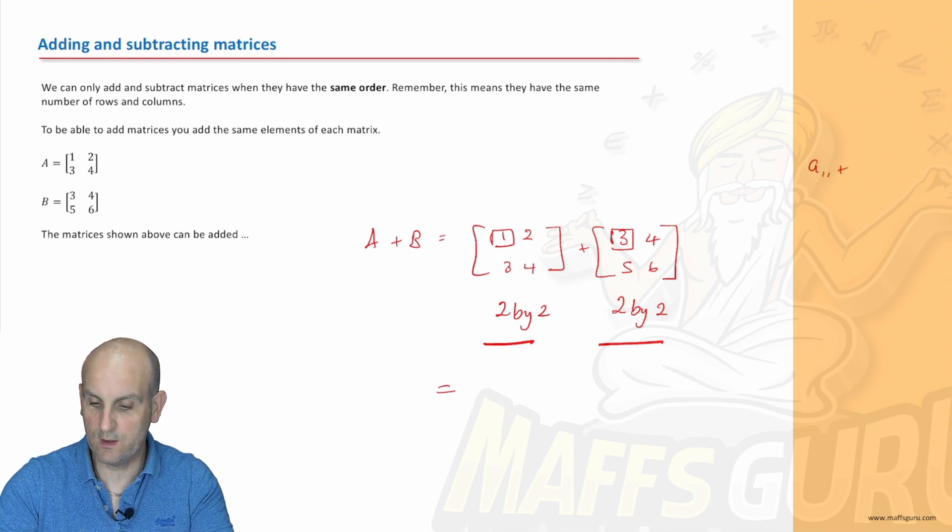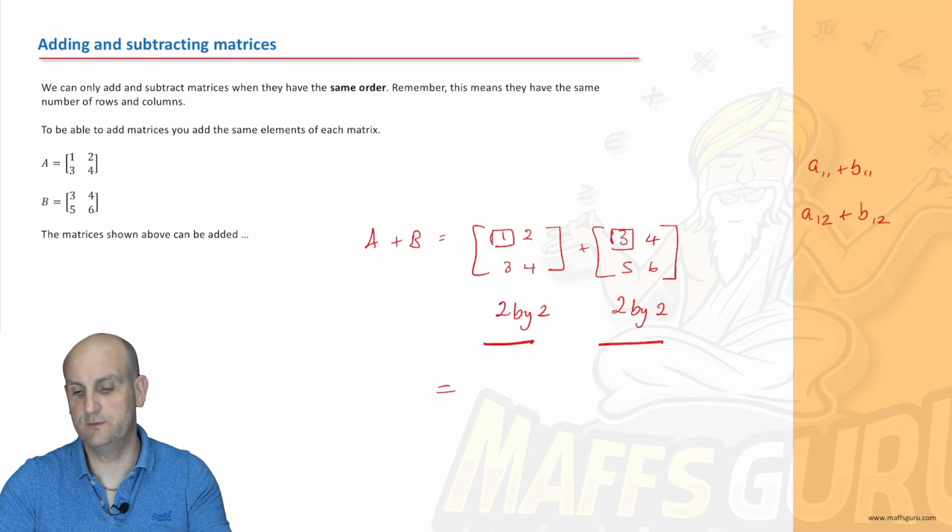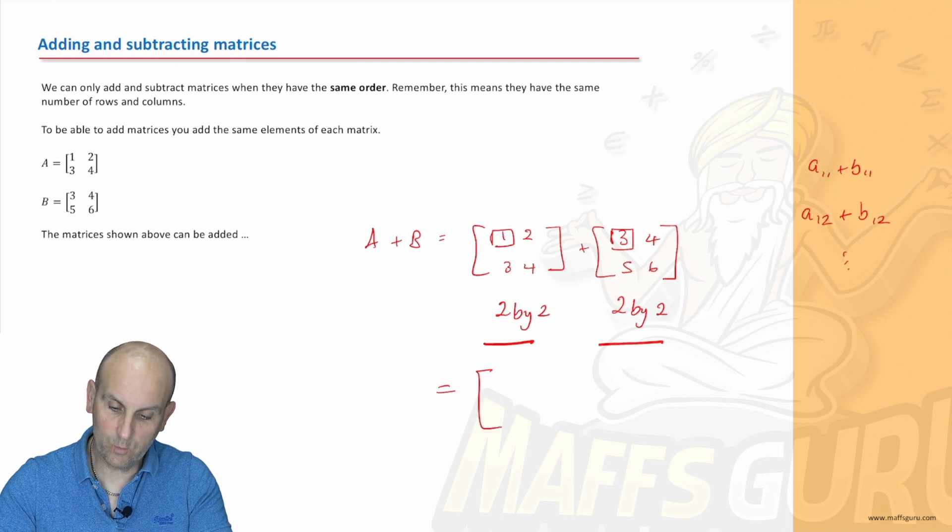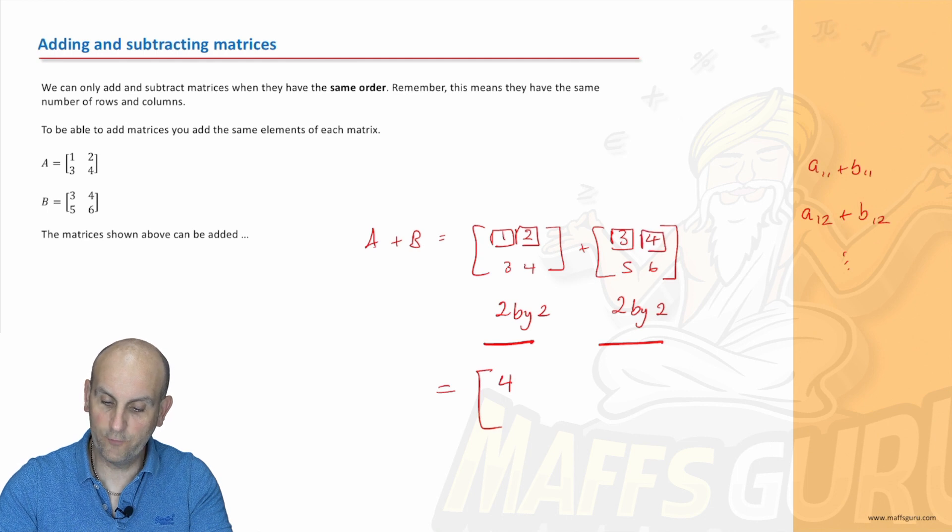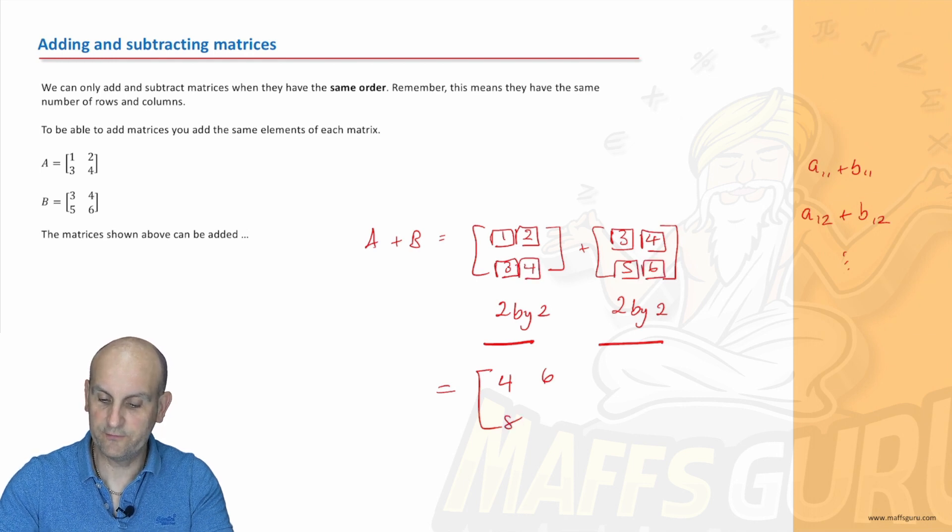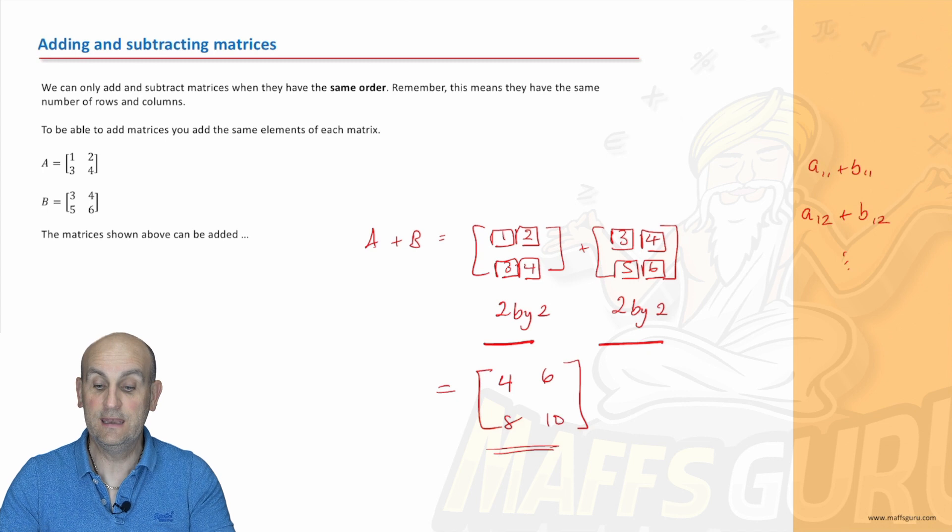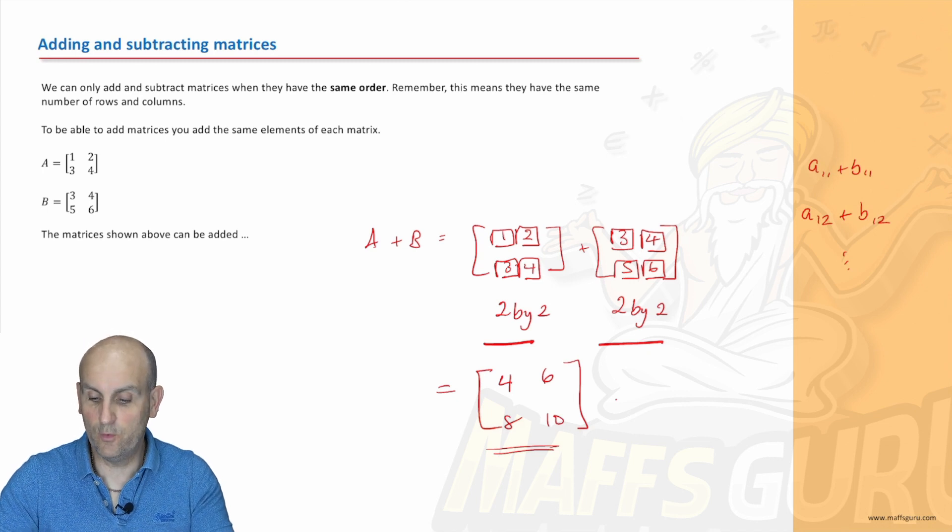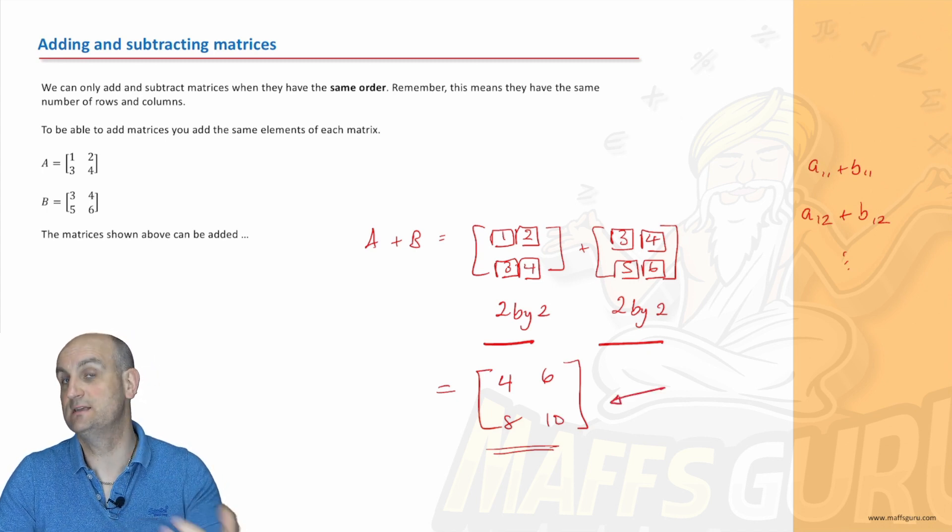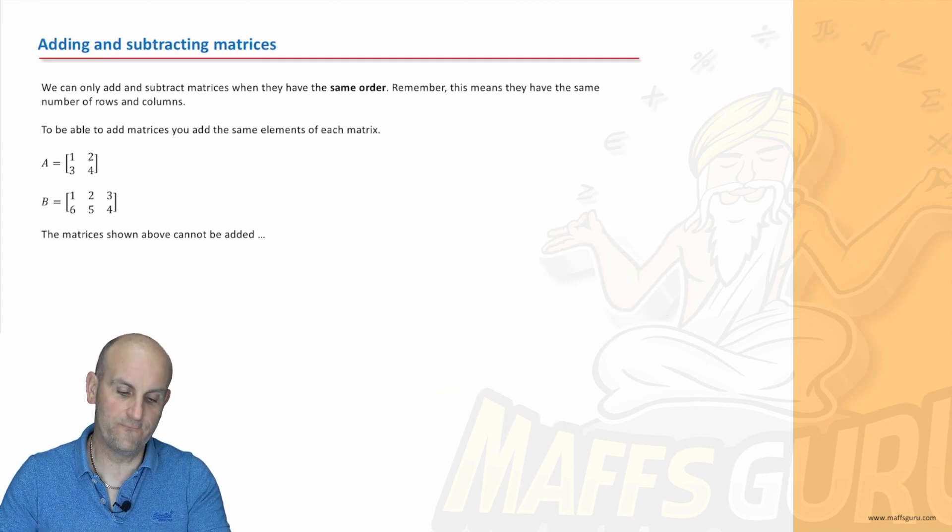Let's do that then. So one plus three gives me four, two plus four gives me six, three plus five gives me eight, and four plus six gives me ten. Believe it or not, there is nothing more complicated than that. What you'll notice is the order of this matrix stays exactly the same as the two you are adding together.